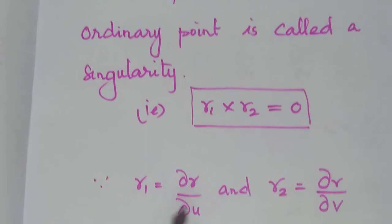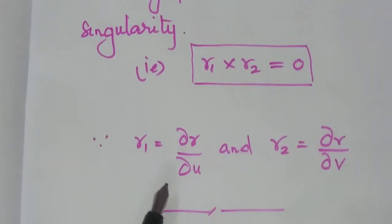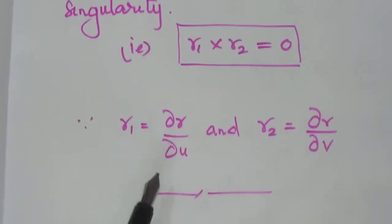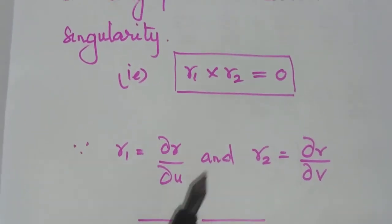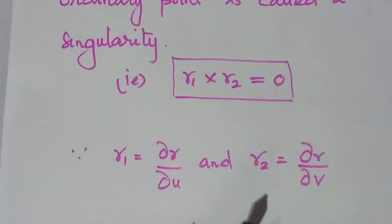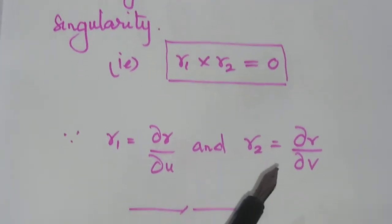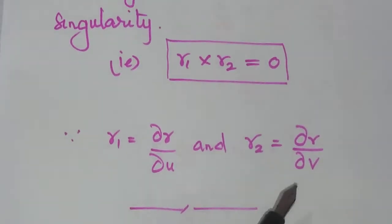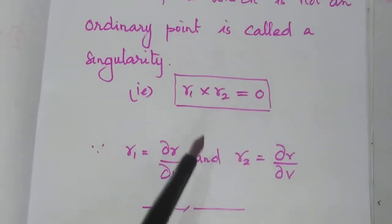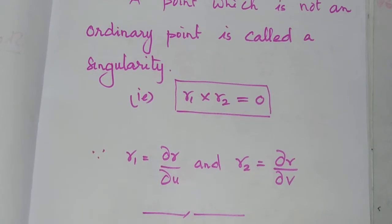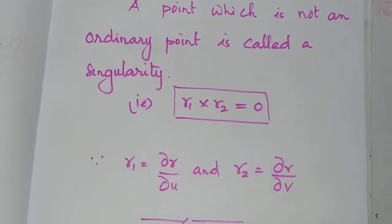Partially differentiate with respect to U. R2 is nothing but the partial derivative with respect to V.